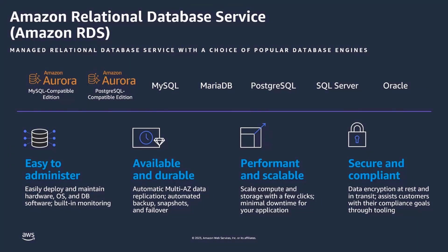Amazon RDS is a managed relational database service with a choice of popular database engines, including open source engines like MySQL, MariaDB, and Postgres, and also a couple of commercial engines like SQL Server and Oracle. Amazon RDS removes the significant effort of managing and scaling your databases, allowing you to focus on making your customers successful. We do that by making your databases easier to administer — you can easily deploy and maintain your hardware, your operating system, and database engine.